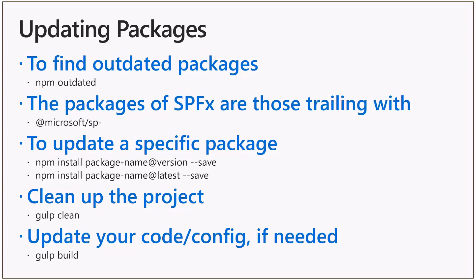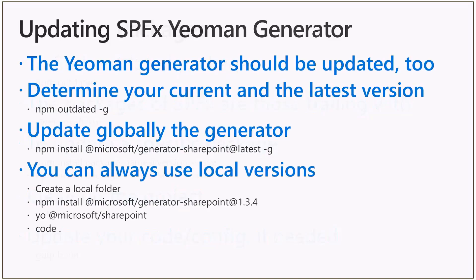On the other side, if you try to keep your solutions updated as much as you can and update packages back-to-back whenever they get released, you'll likely have fewer fixes to do on a per-version basis. That said, you also need to keep in mind that when updating your solution, you may also want to update the Yeoman generator for SharePoint framework. Because the Yeoman generator is usually installed globally on your machine, to find outdated global packages — including the generator for SharePoint — you need to use npm outdated -g for globally installed packages.